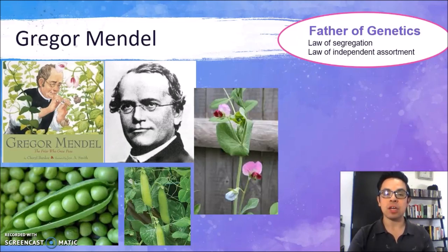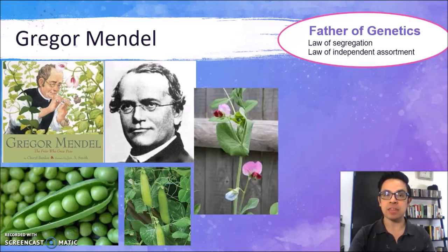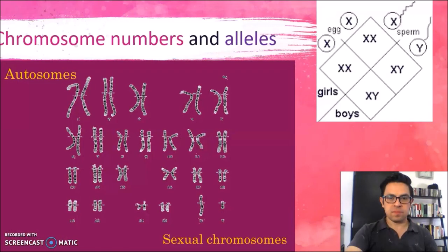Back in that time, there were no microscopes available. We didn't even know what DNA was. But because of the very keen and powerful scientific observations that Gregor Mendel was able to make, he obtained actual rules that apply nowadays using this very simple model, the pea plant.